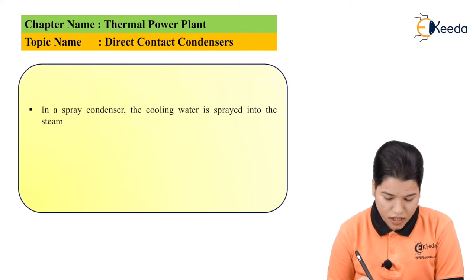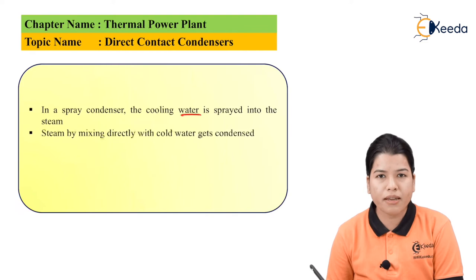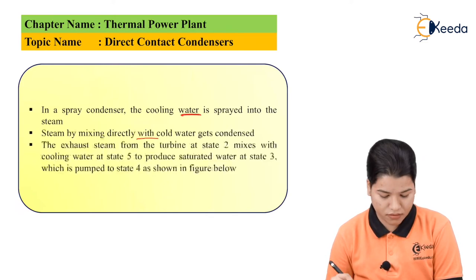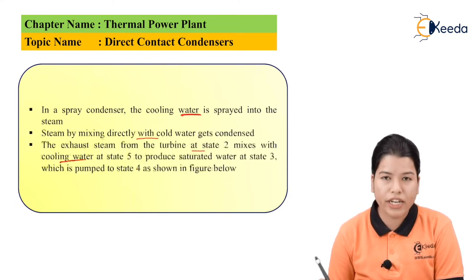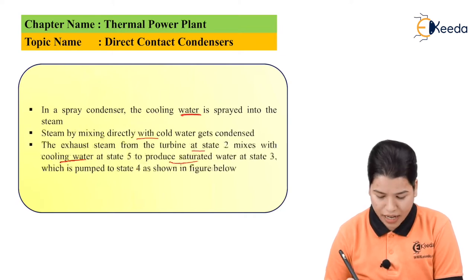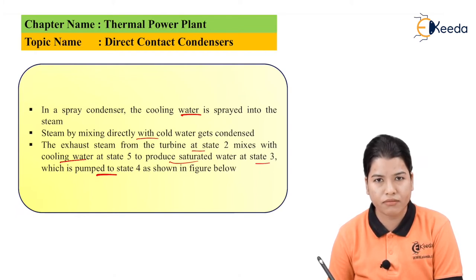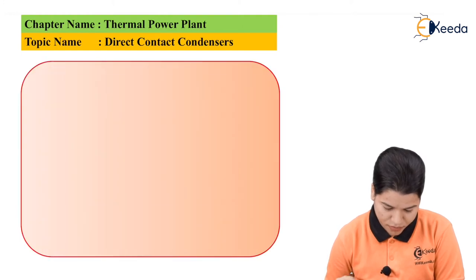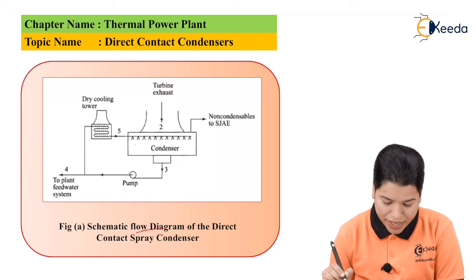In the case of a spray condenser, the cooling water is sprayed directly on the steam, so the steam mixes with the cold water and gets condensed. The exhaust steam from the turbine at state 2 mixes with the cooling water at state 5 to produce saturated water at state 3, which is then pumped to state 4, as shown in the figure below.